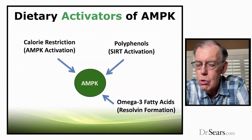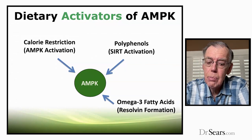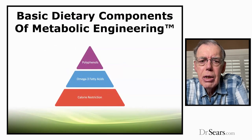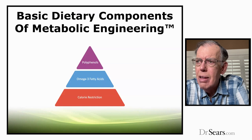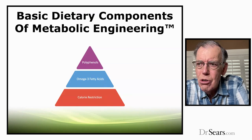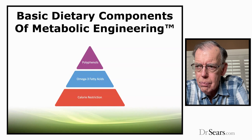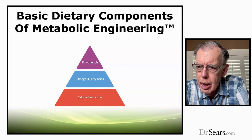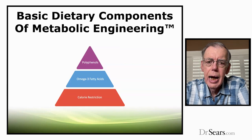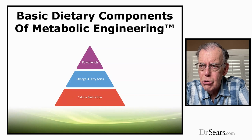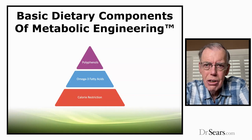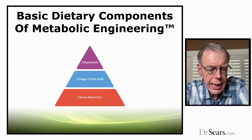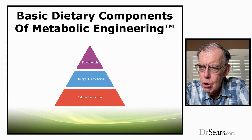So your diet provides a number of opportunities to activate the master switch of metabolism, and by doing so you can reduce insulin resistance. The benefits? You live longer, you live better. The basic dietary components of metabolic engineering are: restricting calories, omega-3 fatty acids, and polyphenols. If you have all three components as part of your dietary system, you have the keys to not only reduce insulin resistance but to maintain wellness for a lifetime.